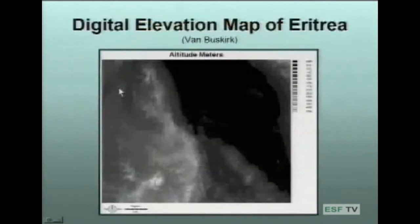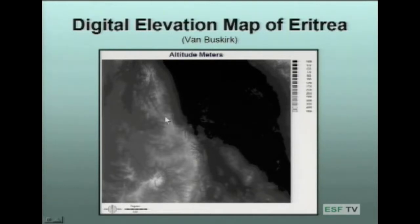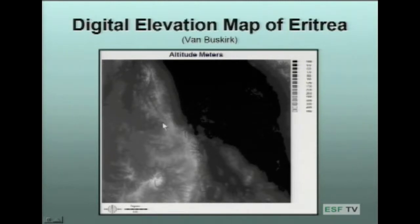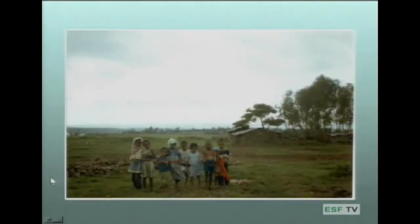If you look at this graphic here, this is a digital elevation map of the country of Eritrea put together using satellite data. The light colors represent high elevation and the dark colors low elevation — and this is the Red Sea right here. The country is roughly divided into two areas: a highland region and a lowland region. The highland region has most of the population; they're subsistence farmers who dwell there because of seasonal rains. Some people also live in the lowland regions — they're mostly herders.